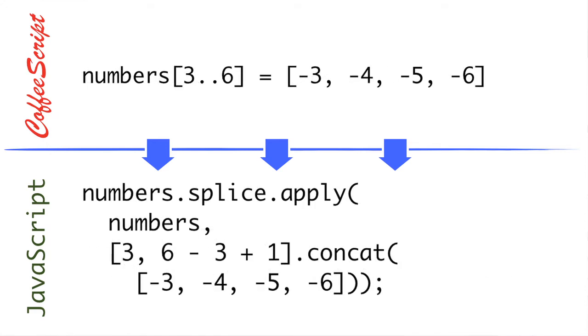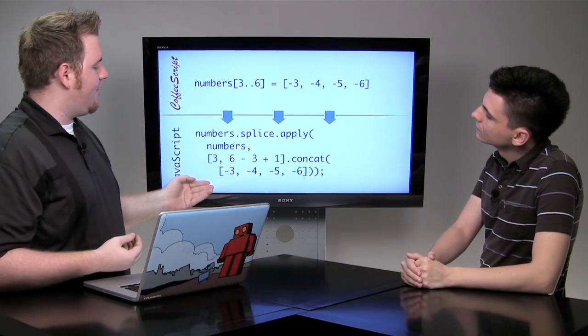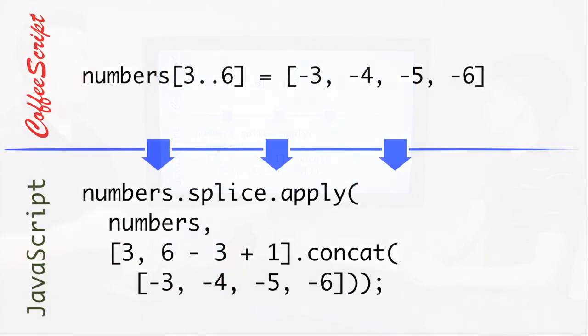Numbers can also be assigned to a segment of an array by assigning an array to a range. And this is a little bit more complicated on the JavaScript side, because it needs to splice it, and it needs to figure out the array that it needs to pass to apply the splice. Now, if you've ever tried to use the splice method, you understand that it can be a little bit difficult to remember how to call it correctly. So this is a nice little notation that allows us to replace the values in array indices 3 through 6 with a set of values.